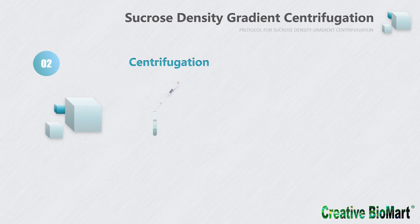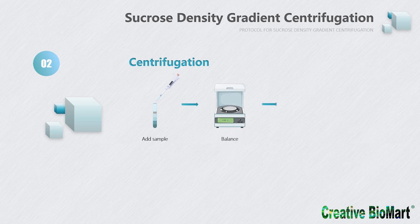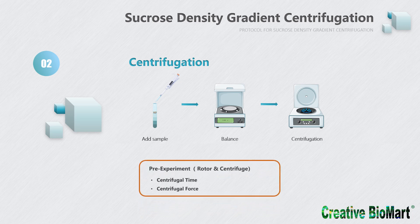After the gradients are prepared, carefully add the sample solution to the top of the gradients. If the density of the sample solution is close to the density of one gradient layer, you can mix the sample with that gradient solution before gradient preparation. Weigh the centrifuge tubes with the sample before centrifugation to ensure the weights are balanced. Because centrifuge and rotor conditions differ between experiments, a pre-experiment is required to determine the optimal centrifugation time to ensure the sample does not settle to the bottom. It is also better to measure the sample concentration, as it may affect the resolution of the bands. After centrifugation, samples in the gradient are separated into different bands according to their sedimentation coefficients.